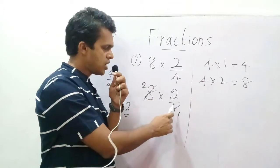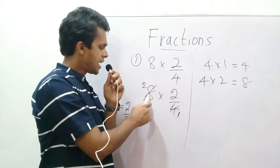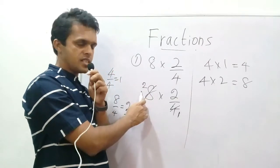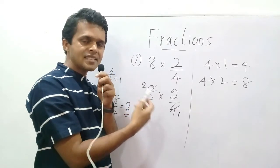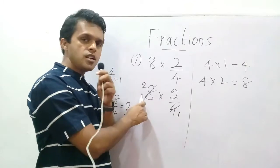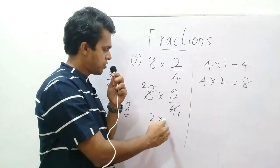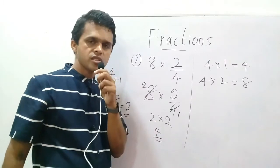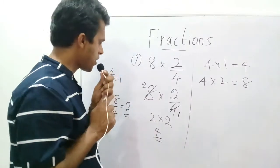How did I take that 1? 4 upon 4 equals 1. 8 upon 4 equals 2. That 2 is written here. So, 1 time and 2 times: 2 into 2 equals 4. The answer is 4.